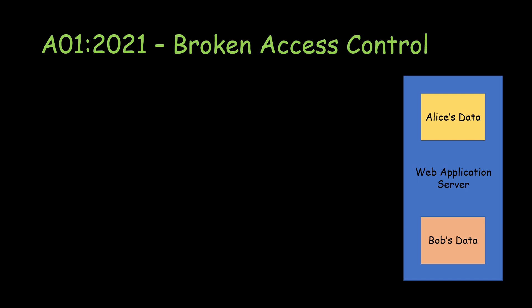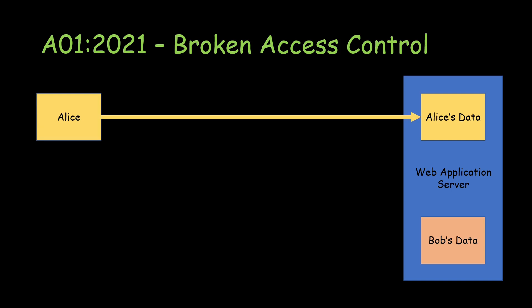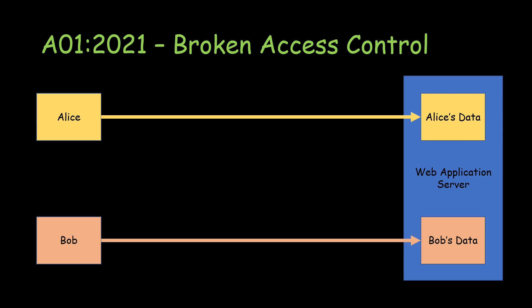Now we'll look at a simple example of Broken Access Control. We have a web application server — simplified as one model — and two users: Alice and Bob. Their data resides on the server. When access control is in place, Alice can log in and access her own data, and Bob can access his own data. They access only the data that is authorized for them.